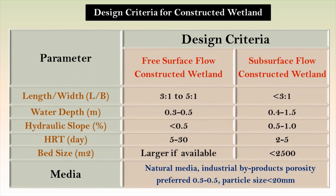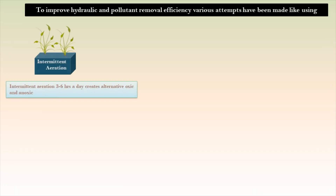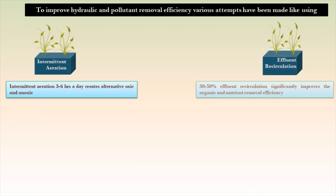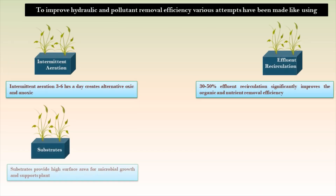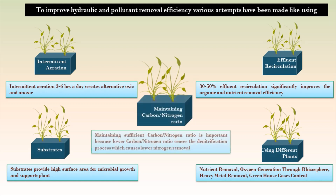The typical design criteria of different constructed wetland types are shown in a table. Subsurface flow constructed wetlands are not only efficient in contaminant removal but also require less space and hydraulic retention time. Intermittent aeration of three to six hours a day creates alternating oxic and anoxic conditions, which enhances nitrogen removal even at low carbon-to-nitrogen ratios.